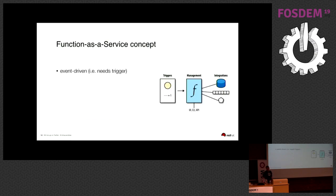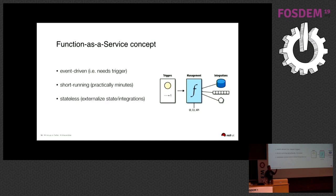You have some kind of trigger — that could be, for example, an upload of an image into S3, or an HTTP call coming in through the API gateway. So you have some kind of event-driven architecture. Typically you have short-running stateless functions, so any kind of state needs to be externalized — both in read and write — which sometimes leads to problems in terms of state hydration.